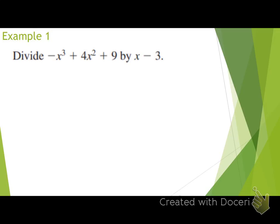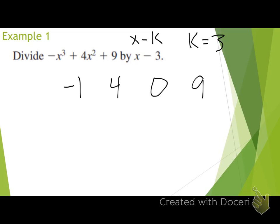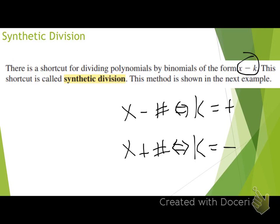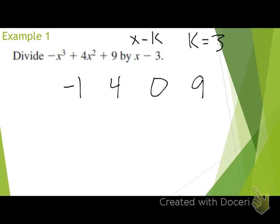I'm going to list out the coefficients of my dividend: negative 1, 4, 0 for the x term, and then 9. Now I'm just listing out my coefficients — this is going to look a little weird at first, but once you get the hang of it, it gets pretty easy. What would my k value be in this case? It would just be 3, because it's x minus k. So that's what I was trying to say about k being a positive number — that's when it's x minus a number.